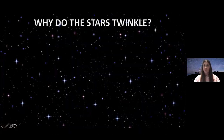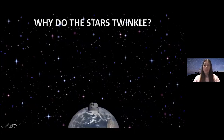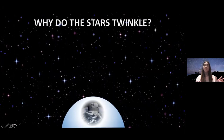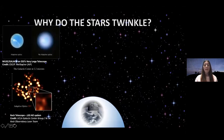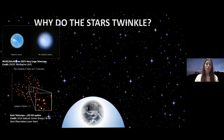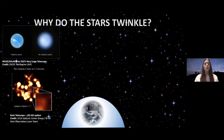Why do the stars twinkle? Well, they twinkle because we look at them from the Earth and our eyes and our telescopes are surrounded by the atmosphere. The light coming from the stars is perturbed by the atmospheric turbulence, and that's why we see twinkling. This affects our astronomical observations — instead of seeing sharp, nice resolved objects, we see blurred things.